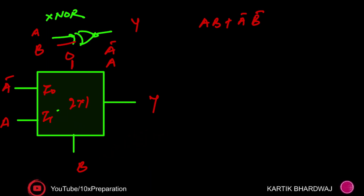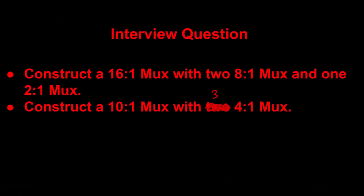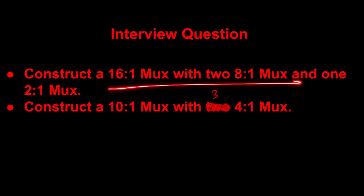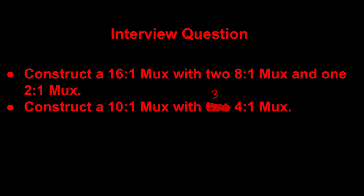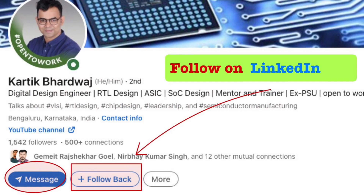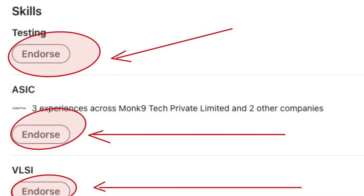So like this you can implement all the basic gates using a 2x1 MUX. You may know all these things, but it's important to be clear on your fundamentals as you can't always retain everything. In the next lecture, I will ask you to solve: implement a 10x1 MUX using three 4x1 MUXes. Try it out! Follow me on LinkedIn and endorse my skill if you liked this. Thank you, have a nice day.